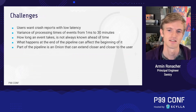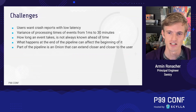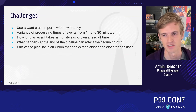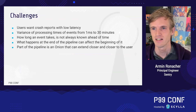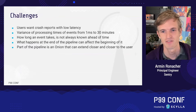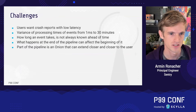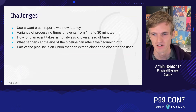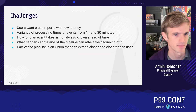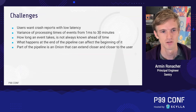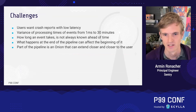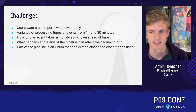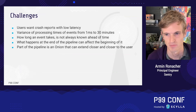So what are the challenges with this? The biggest challenge is that users really expect reports to come in quickly with the lowest latency possible, but an individual crash report can actually have an incredibly high variance of processing times — multiple orders of magnitude. An event can make it through the pipeline in a millisecond, but an event can also be in a holding pattern for up to 30 minutes or more, and how long this takes depends on a lot of factors that aren't necessarily known at the beginning.